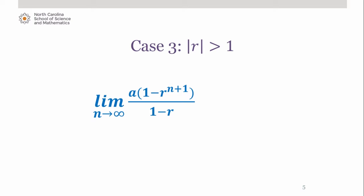Suppose now that the absolute value of r is greater than 1 — in other words, the common ratio is less than negative 1 or greater than 1. In this case, we find that the limit as n approaches infinity of a times (1 minus r to the n plus 1) divided by (1 minus r) is either positive or negative infinity, because the limit of r to the n plus 1 is either positive or negative infinity. So if the common ratio is greater than 1 or less than negative 1, the series would diverge as well.